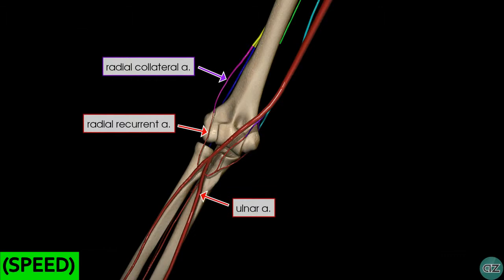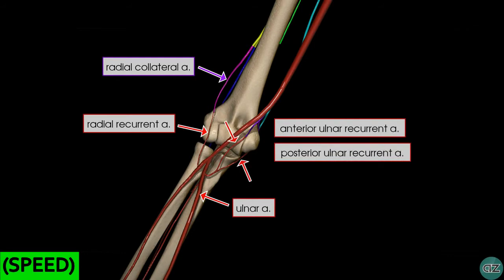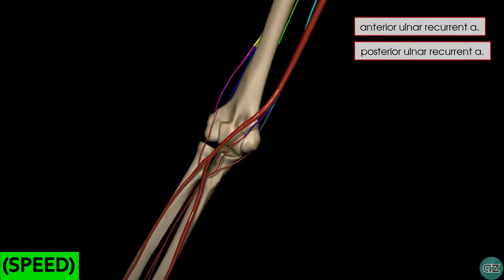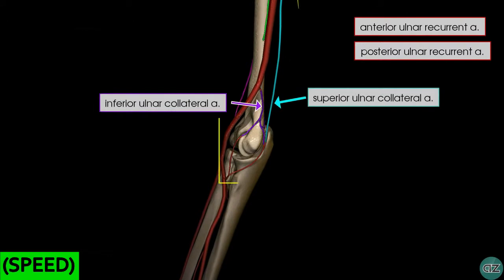The ulnar artery passes along the medial aspect of the forearm. Proximally it gives off the ulnar recurrent arteries — a recurrent artery simply being one which reflects back in the opposite direction of its parent artery. There are two ulnar recurrent arteries, anterior and posterior. In this model they're seen originating from a common trunk, but often they will arise directly from the proximal ulnar artery. We can see how they anastomose with the superior and inferior ulnar collateral arteries, which arise directly from the brachial artery.